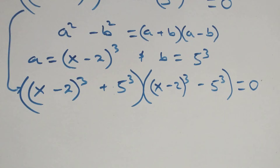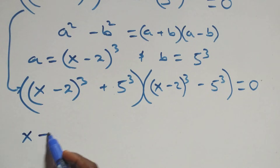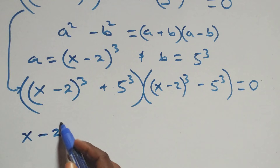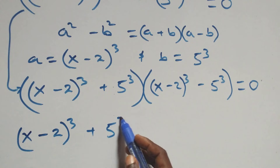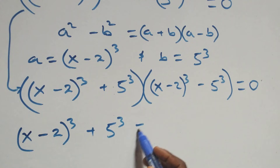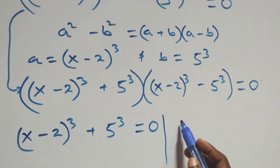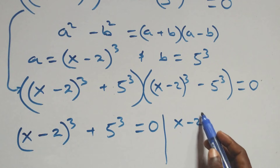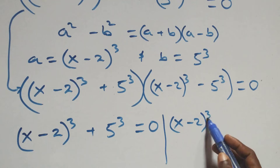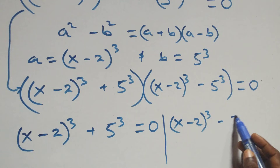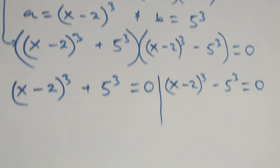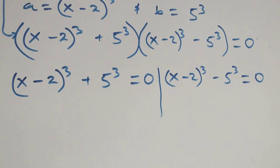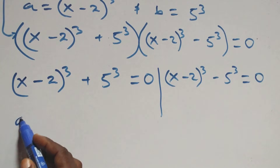From here we have two possible cases. The first one: (x minus 2) all raised to power 3 plus 5 raised to power 3 equals to 0. Or we have (x minus 2) all raised to power 3 minus 5 raised to power 3 equals to 0.